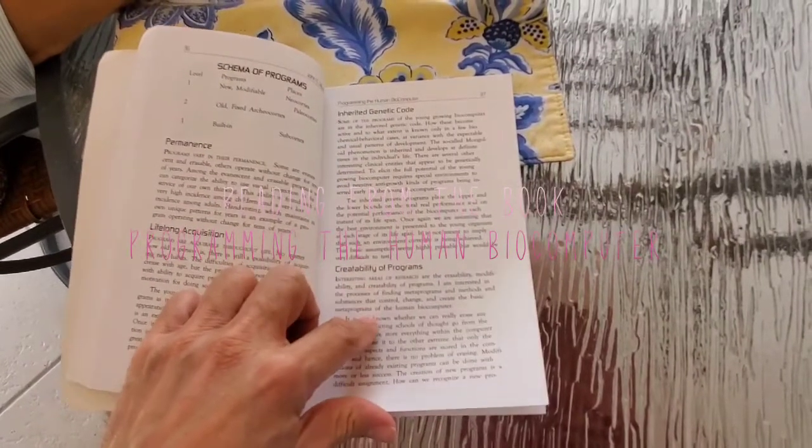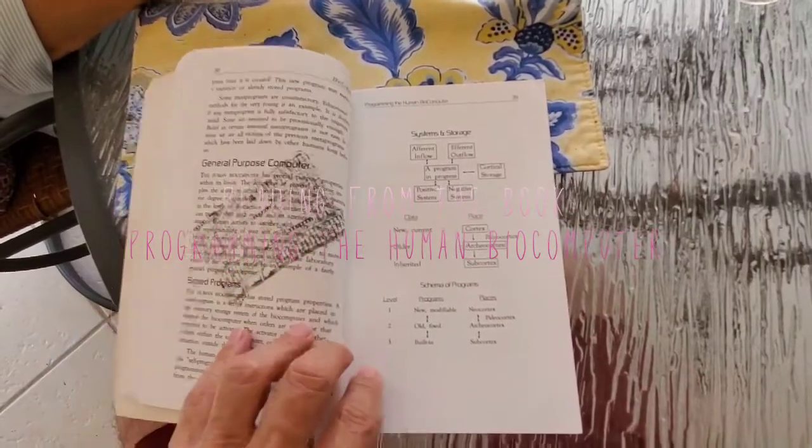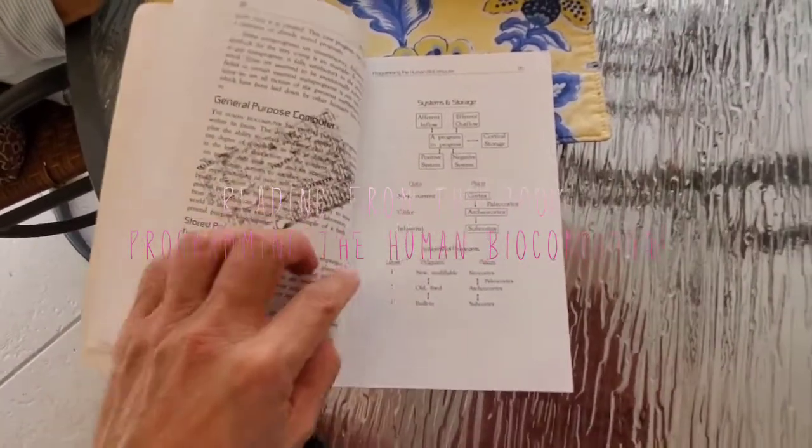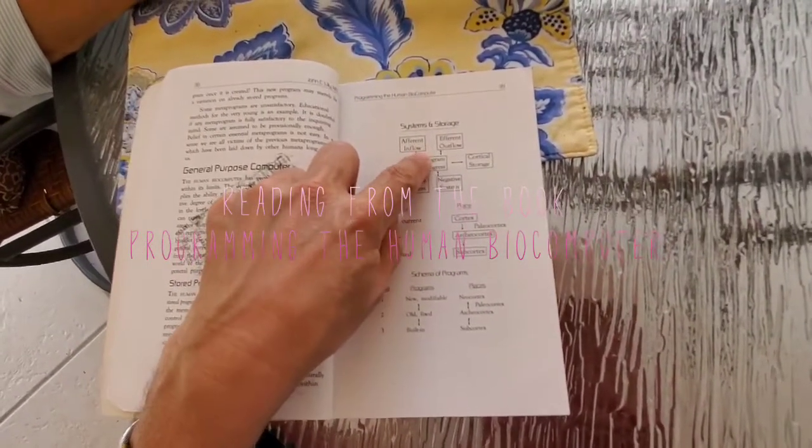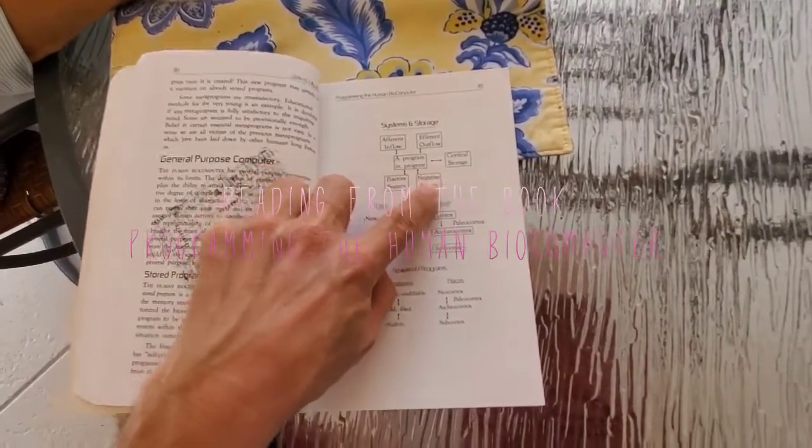Inherited genetic code, creatability of programs. General purpose computer, stored programs system and storage, afferent inflow, efferent outflow of program in progress, positive system, negative system.